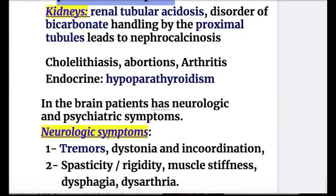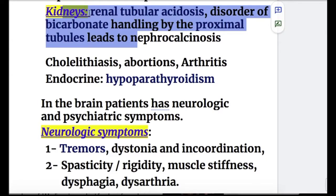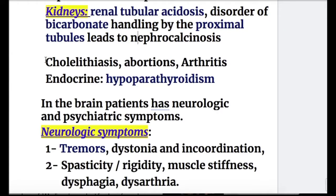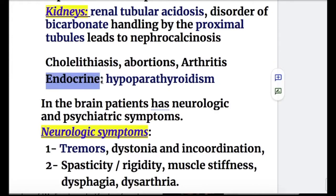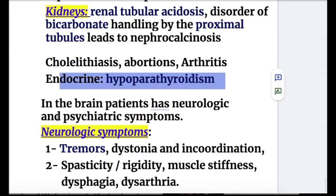In the kidney, there is renal tubular acidosis, decreased carbohydrate and protein absorption, and disorders of bicarbonate handling by the proximal tubules, leading to nephrocalcinosis. There may also be cholelithiasis, abortions, and arthritis. Among endocrine abnormalities, hypoparathyroidism may occur.